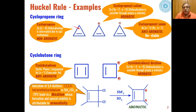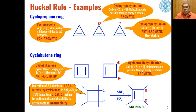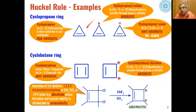Looking at examples following Hückel's rule: cyclopropene has two pi electrons with n equal to zero, but delocalization is interrupted due to the sp3 methylene group, so cyclopropene is a non-aromatic compound. However, the cyclopropene cation has 4n+2 pi electrons — two electrons — and delocalization is possible through the empty p orbitals on the carbon. Because of this delocalization, this cation is an aromatic cation.